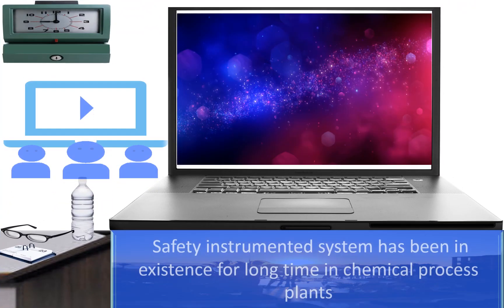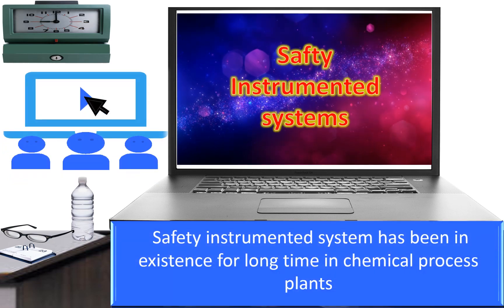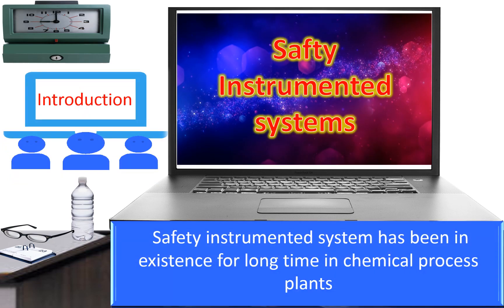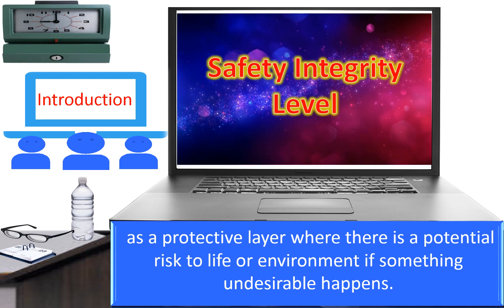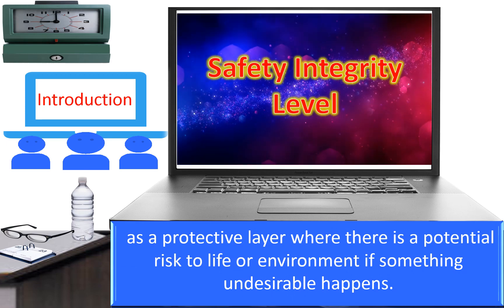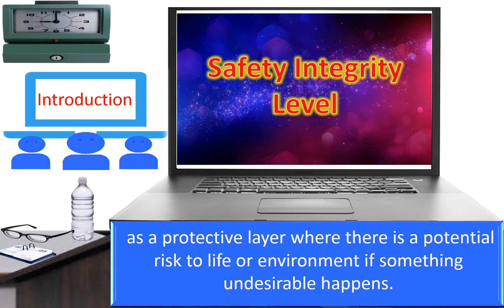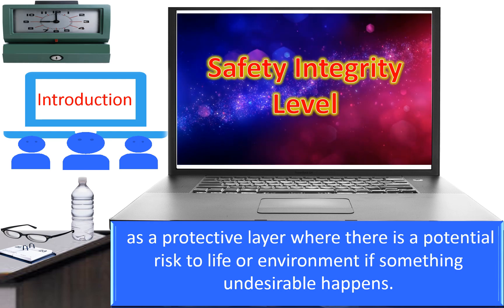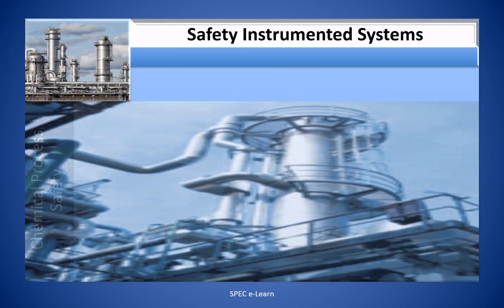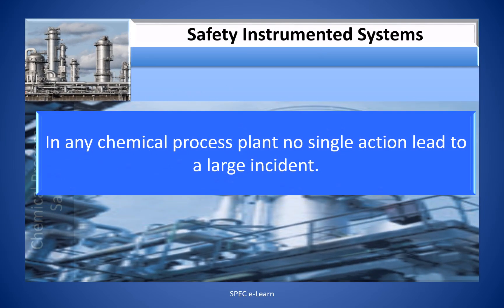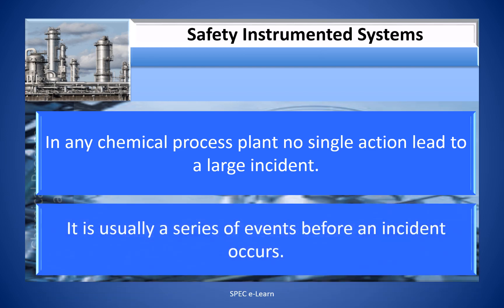Safety Instrumented Systems have been in existence for a long time in chemical process plants as a protective layer where there is a potential risk to life or environment if something undesirable happens. In chemical process plants, no single action leads to a large incident — it is usually a series of events before an incident occurs.